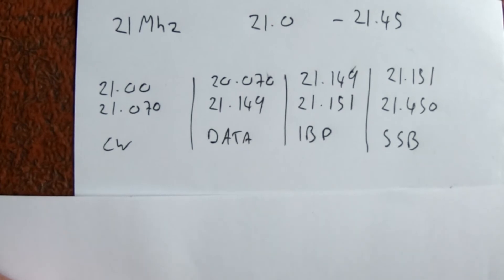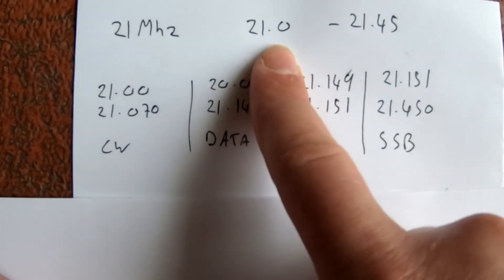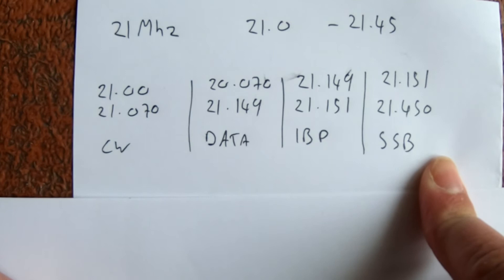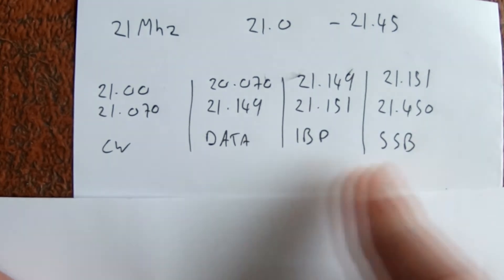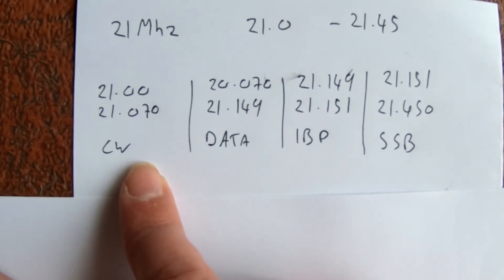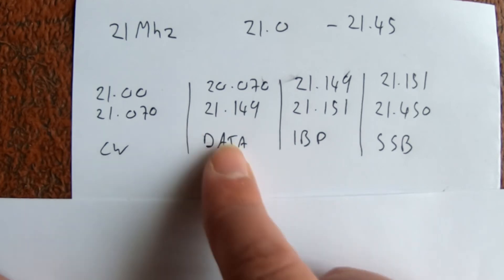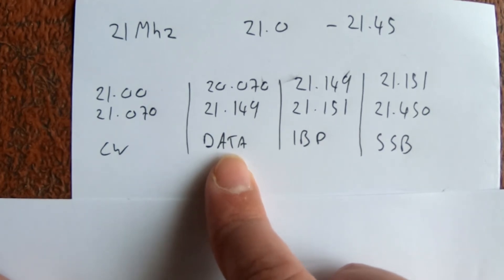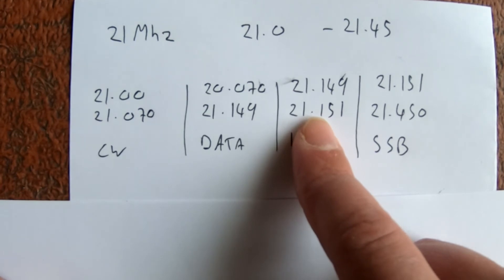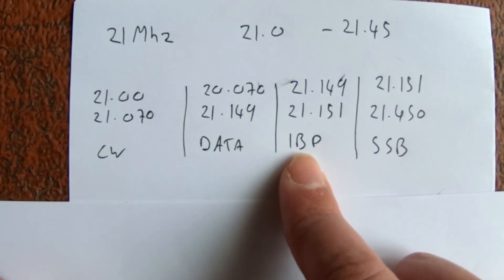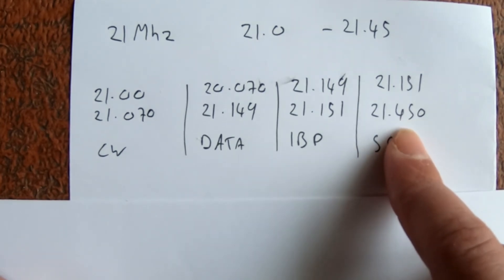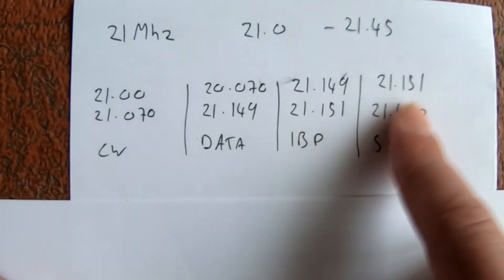The 15-meter band or 21 megahertz stretches from 21.0 to 21.450 and it's all been divided up. Check the band plan - Morse code is from 21.0 to 21.070, data modes like FT8 and JT65 from 21.070 to 21.149, beacon projects from 21.149 to 21.151, and single sideband is 21.151 to 21.450. That's the part I'm interested in.